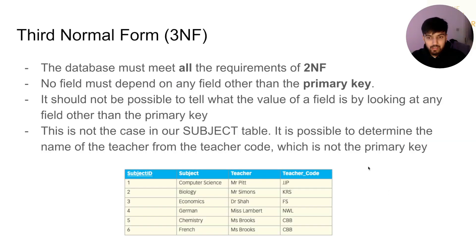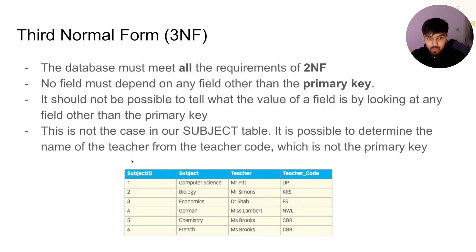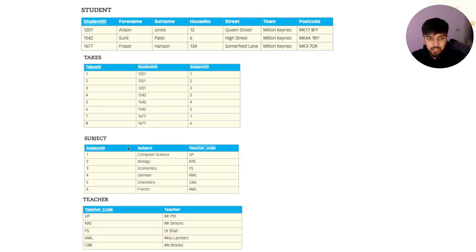Third Normal Form means the database must meet all the requirements of Second Normal Form, and no field must depend on any field other than the primary key. It should not be possible to determine the value of a field by looking at any other field other than the primary key. This is not the case in our subject table, as it's possible to determine the name of the teacher from the teacher code — teacher and teacher code are linked, and it doesn't depend on the primary key.